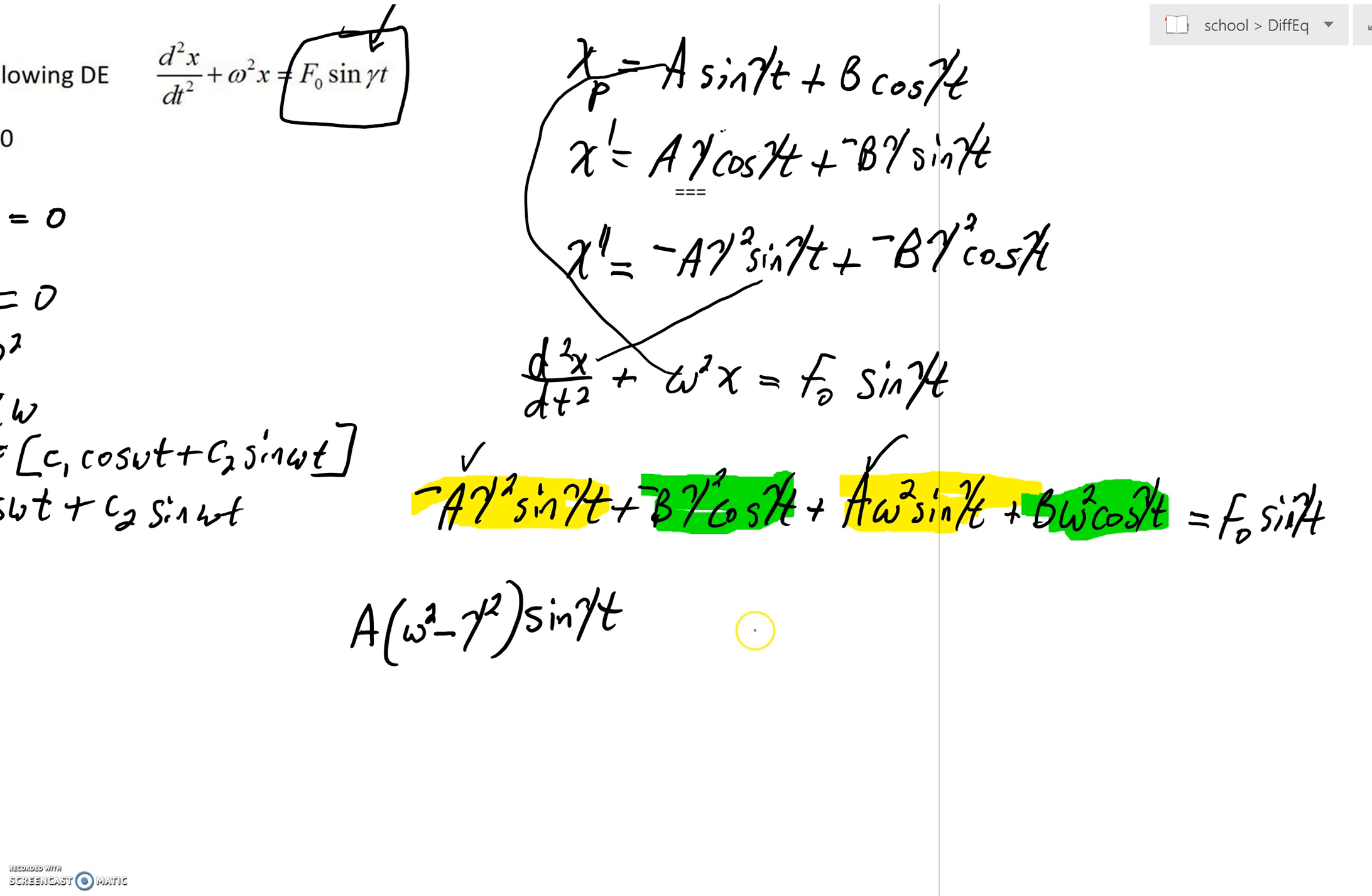Likewise, in green, you could see that you could factor out a B. And once again, we'd have an ω² - γ². And on the right-hand side, I'll factor out a cos(γt).